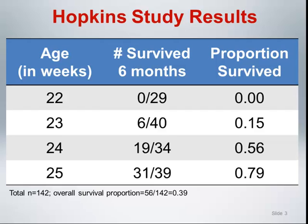At 22 weeks, there were zero infants surviving six months out of 29 observed, yielding a survival proportion of 0.00. At 23 weeks, 6 out of 40 survived for a survival proportion of 0.15. At 24 weeks, 19 out of 34 survived for a survival proportion of 0.56. At 25 weeks, 31 out of 39 infants survived for a survival proportion of 0.79.